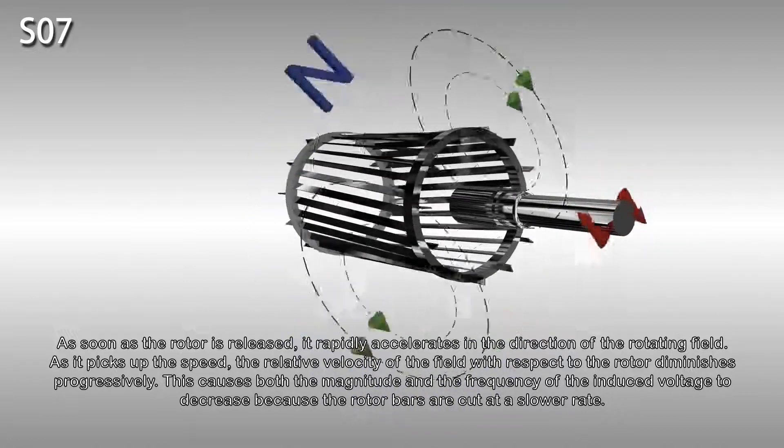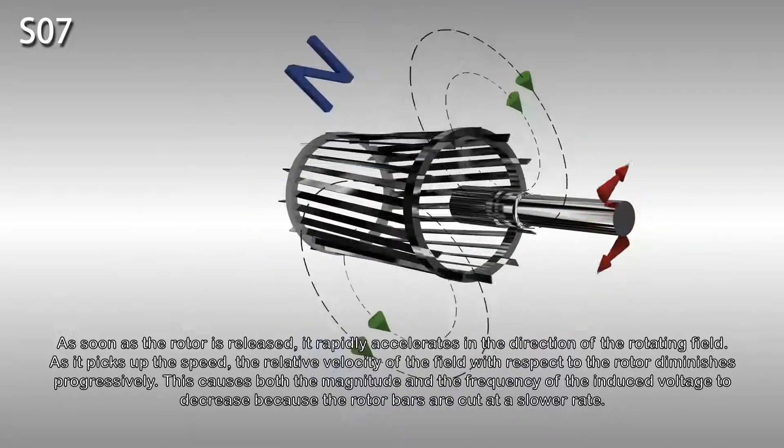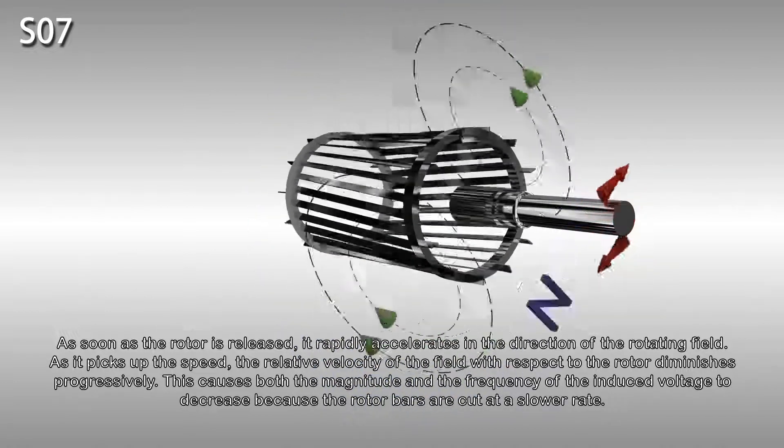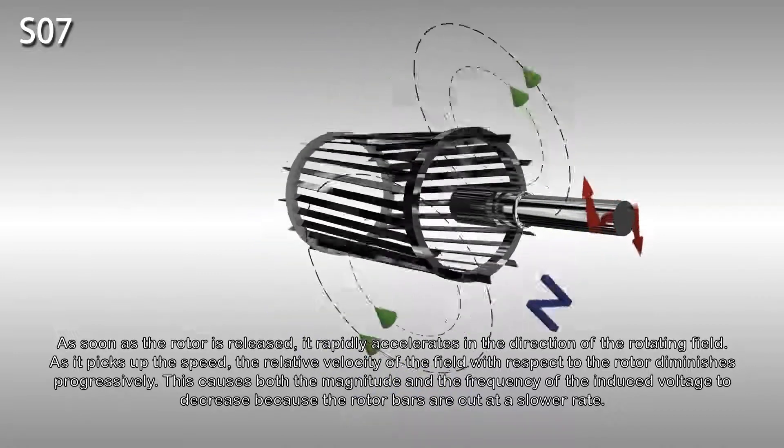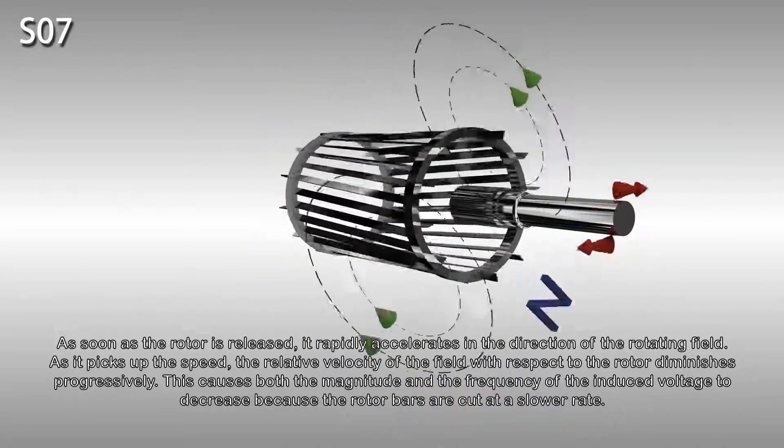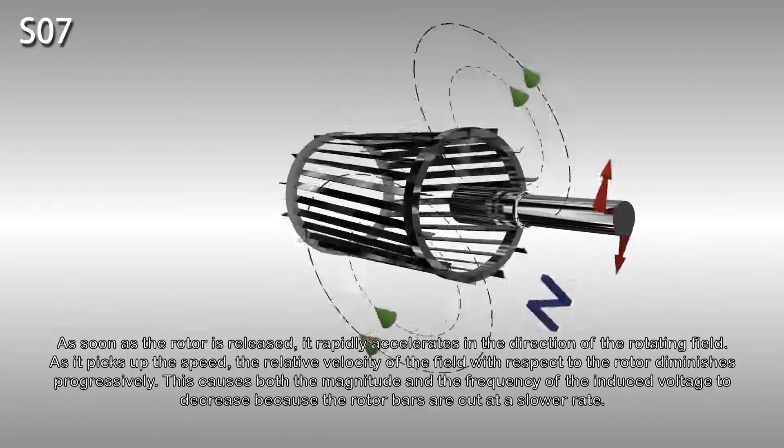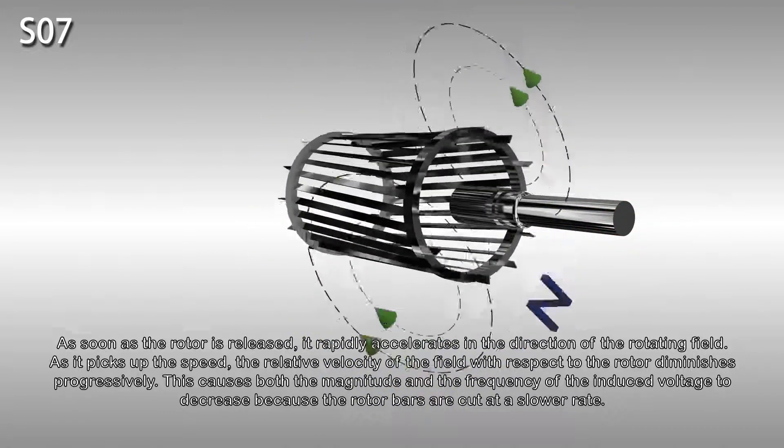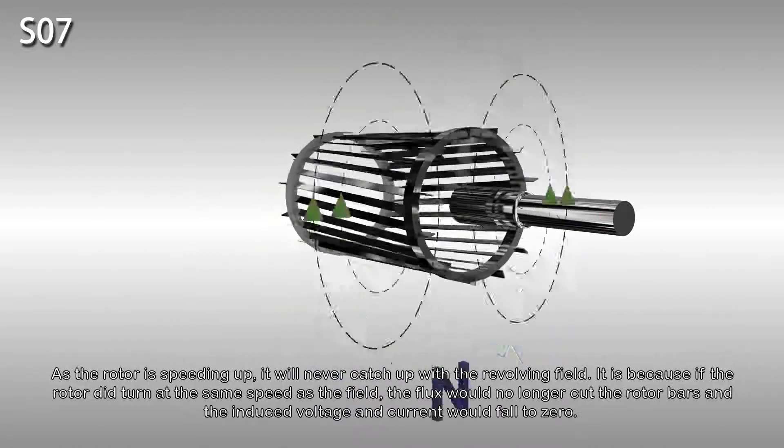As soon as the rotor is released, it rapidly accelerates in the direction of the rotating field. As it picks up speed, the relative velocity of the field with respect to the rotor diminishes progressively. This causes both the magnitude and the frequency of the induced voltage to decrease because the rotor bars are cut at a slower rate.